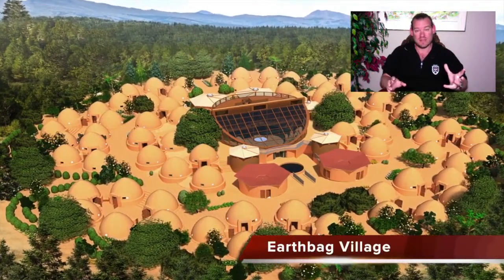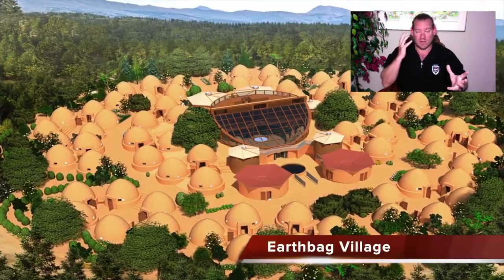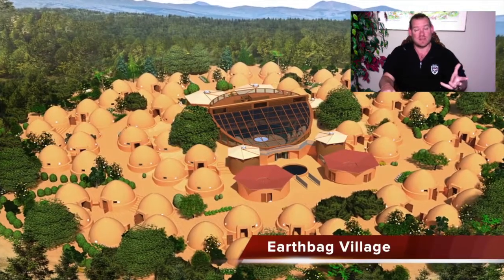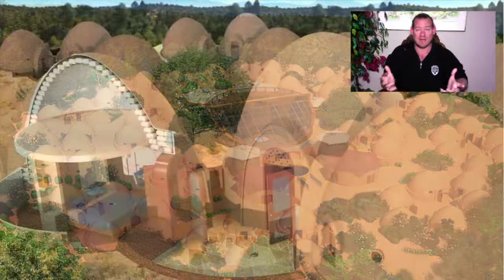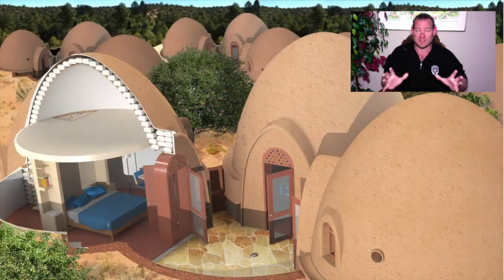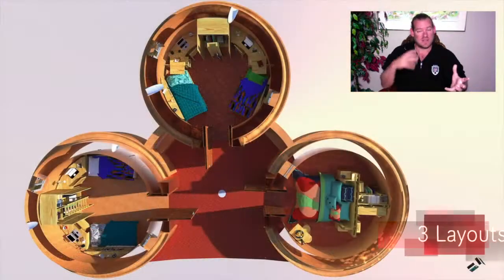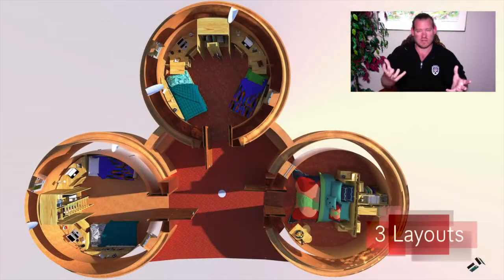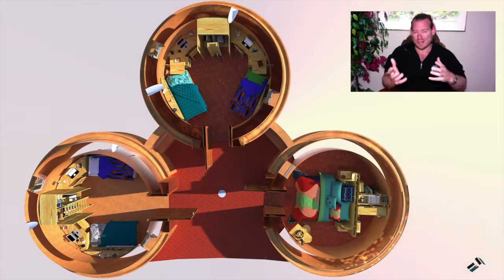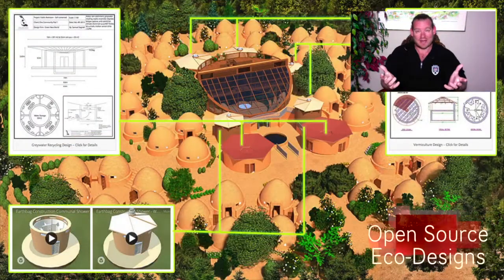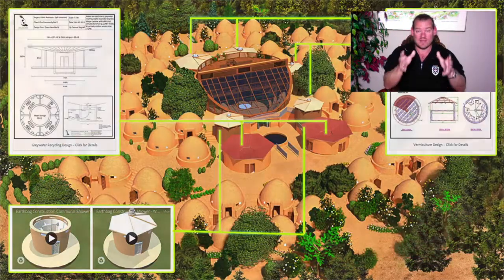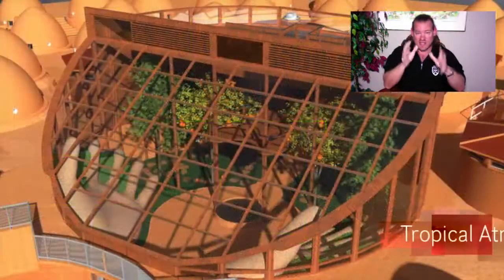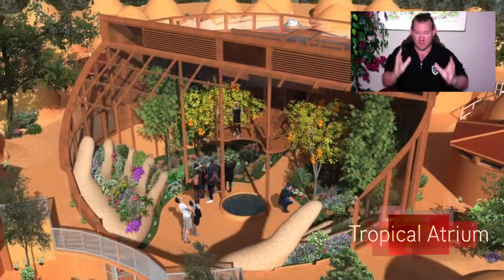Physical sustainability and what we call emotional sustainability. Physical sustainability is what everybody's familiar with — you can see it happening in the background right now — covering food, energy, and housing. There's also the emotional sustainability components, which include highest good economic models, highest good education, fulfilled living practices, and true stewardship.